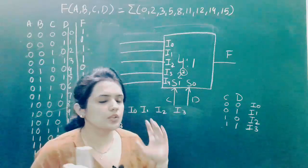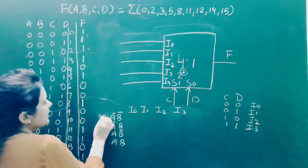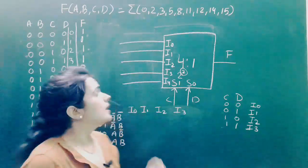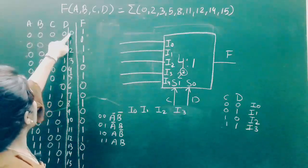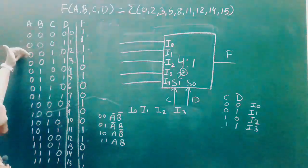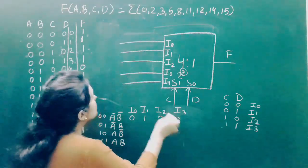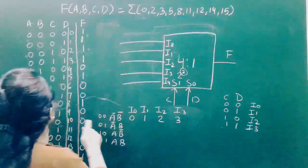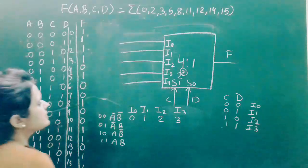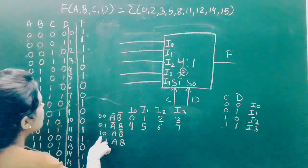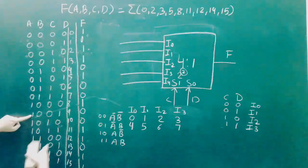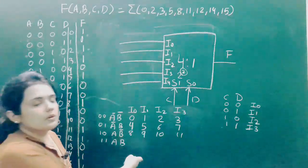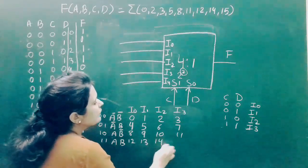In the truth table, A and B = 00 for min terms 0, 1, 2, 3. A and B = 01 for min terms 4, 5, 6, 7. A and B = 10 for min terms 8, 9, 10, 11. And A and B = 11 for min terms 12, 13, 14, 15.